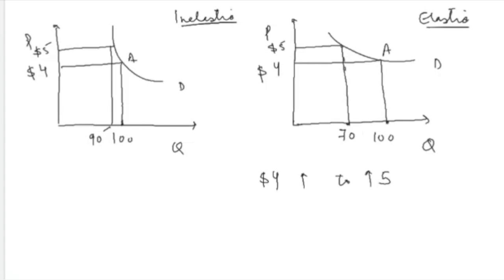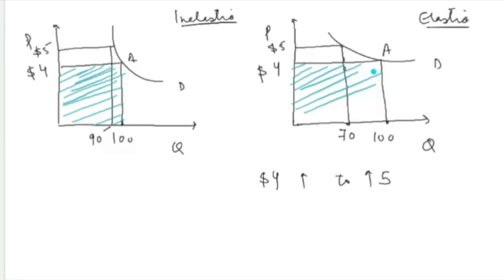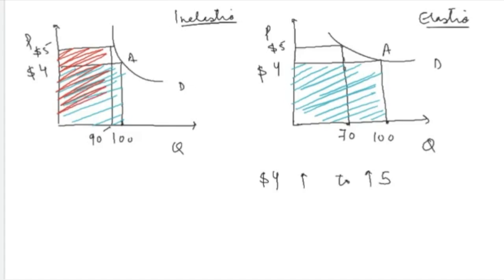Even before looking at total revenue graphically, you can clearly see that in the case of an elastic demand curve, the reduction in consumption is much larger than in the inelastic case — which is logical, because elasticity represents more responsiveness. Now let's plot the total revenue for both cases. When the price was $4, this area represents total revenue for the inelastic case, and this for the elastic case. After the price increase, the new total revenue areas are shown for each case.